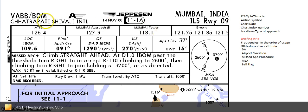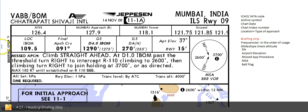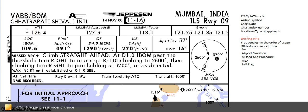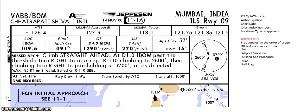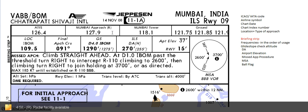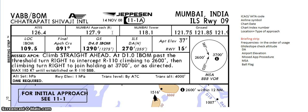This box is called the heading, or as noted on the left side, the briefing strip. The briefing strip begins with the frequencies you are going to use, in the order in which you'll use them. First is the ATIS frequency, since before the approach you'll tune into ATIS to get weather information such as the QNH. Next is Mumbai Approach frequency — the letter R in brackets means radar facility is available. Then tower frequency, and once you've landed, ground frequency.